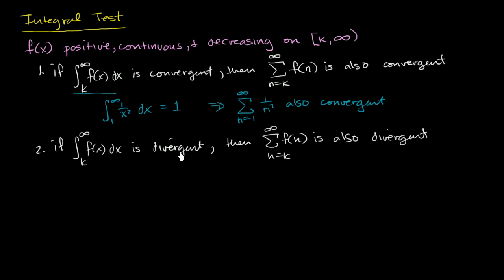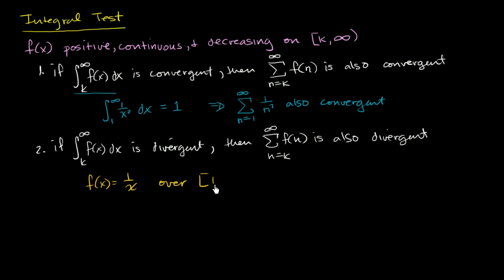Now we can see an example where we go the other way. Let's start with f of x equal to one over x. It definitely meets our conditions: it is positive, continuous, and over the interval from one to infinity, one over x is positive, continuous, and decreasing — as x increases, f of x decreases. So the integral test should apply.